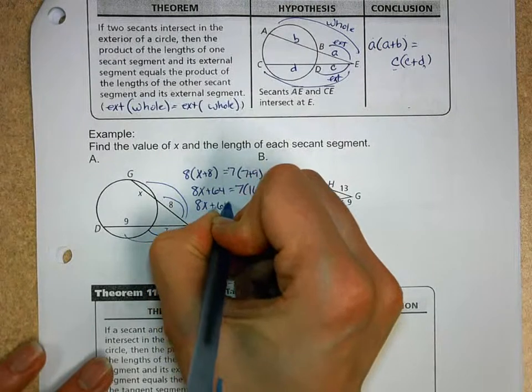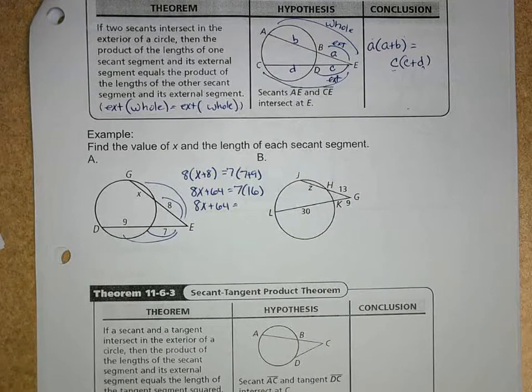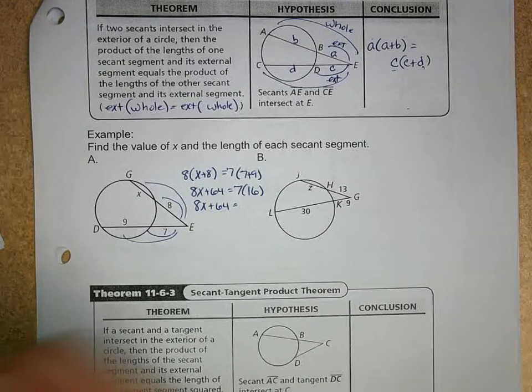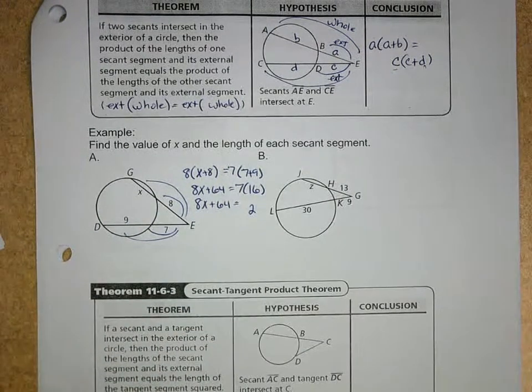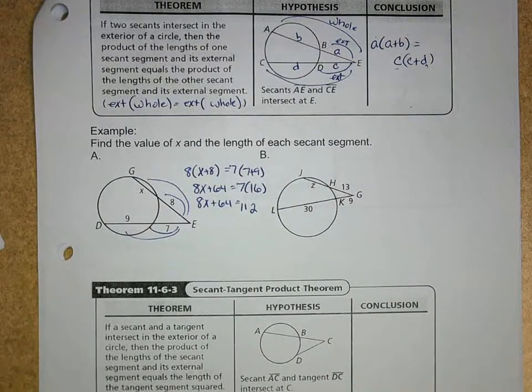So I'm going to get 8X plus 64 equals 7 times 16. 8X plus 64 is equal to what? 7 times 16. My brain cells are fried, so it's not helping me here very much. Let me get there to that point. 7 times 16, we got 2, carry the 4, so it should be 112. Now make sure I do my math right here.